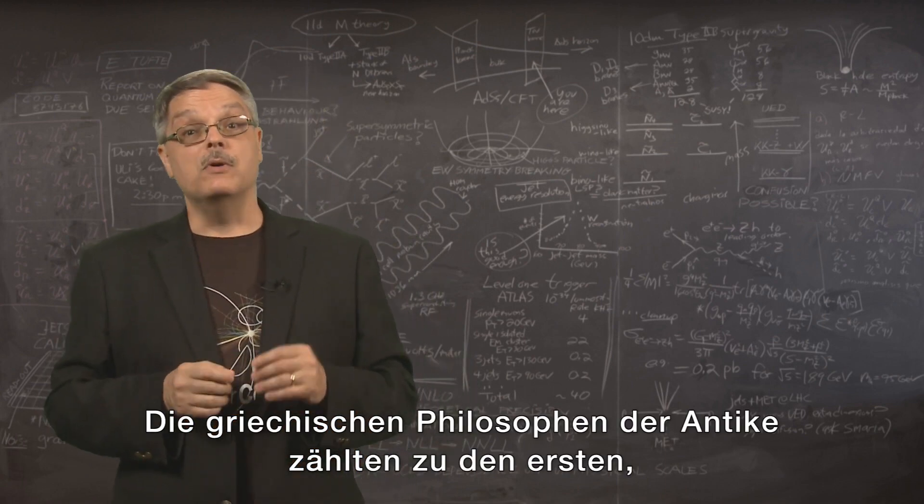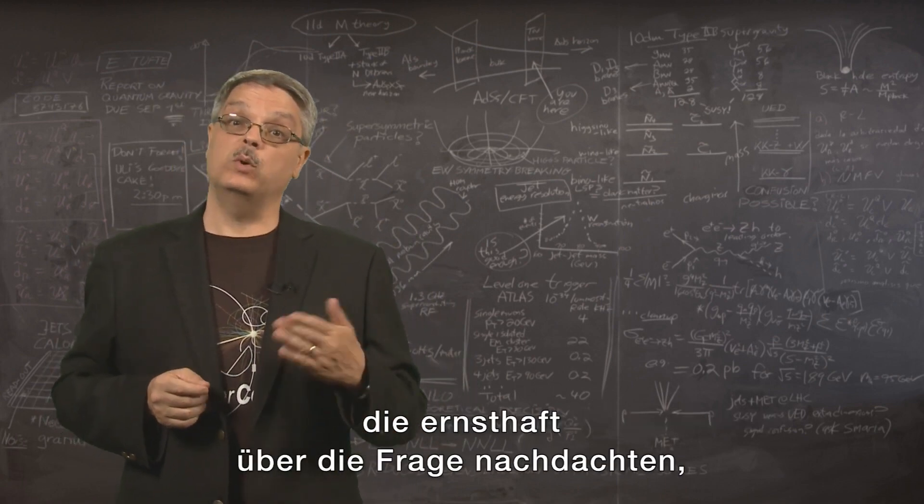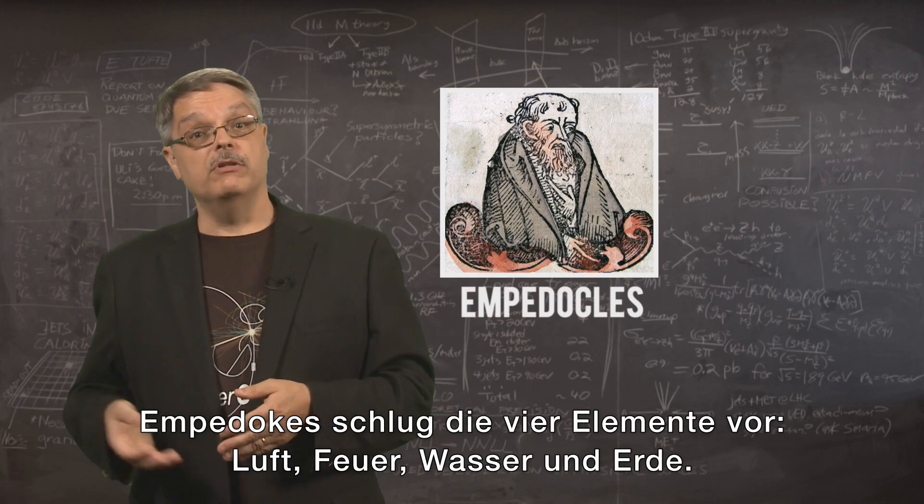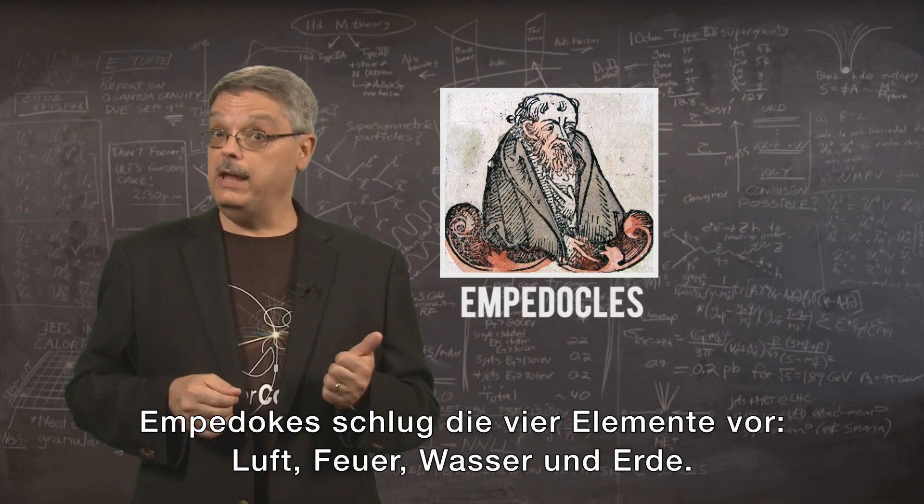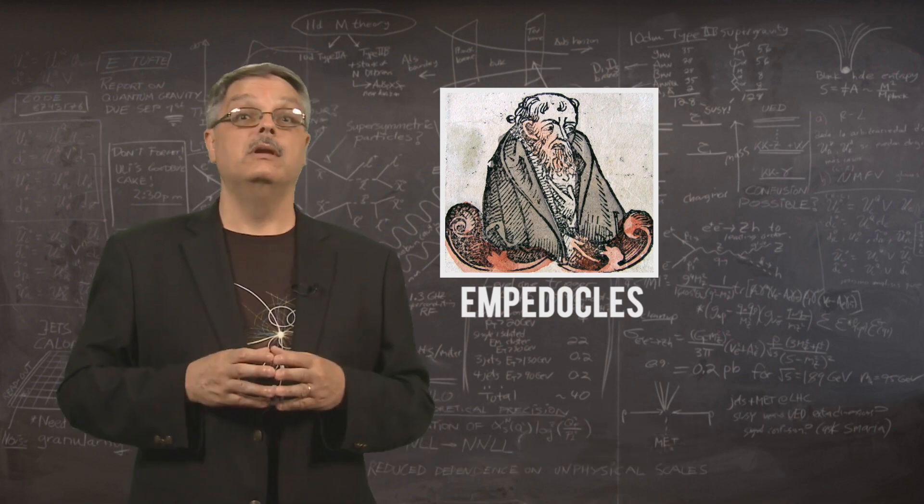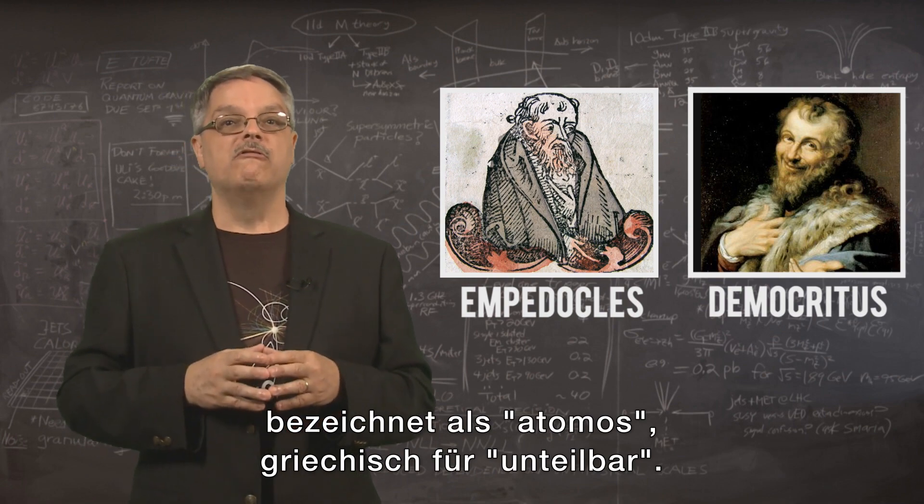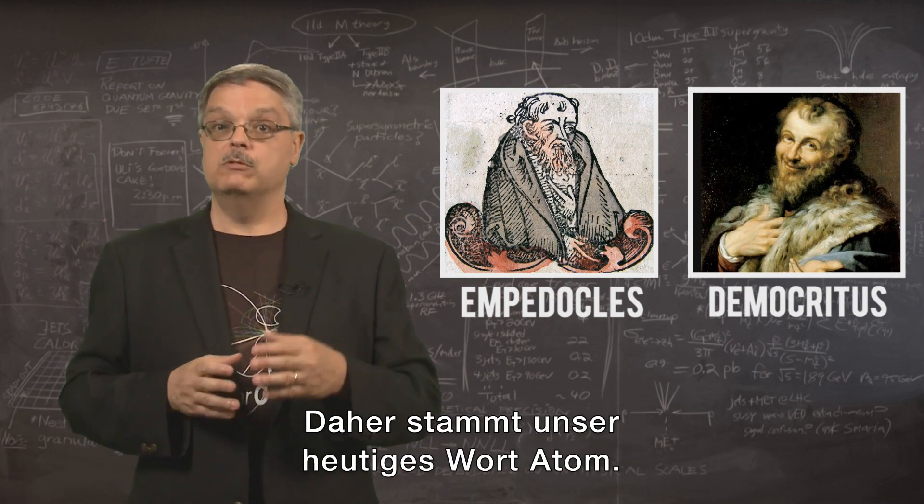The ancient Greek philosophers were among the first to think seriously about the question of the building blocks of the universe, with Empedocles offering the four elements of air, fire, water, and earth, and Democritus suggesting tiny, indivisible objects called atomos, from which our word atom originates.